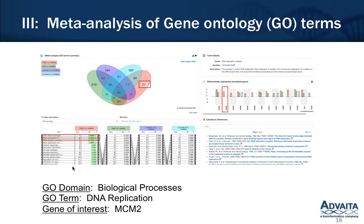I also showed you how you can use gene ontology analysis to generate hypotheses or identify biomarkers. We went into gene ontology and selected biological processes specific to TNBCs, from which we got DNA replication initiation. We found that MCM2 was specifically annotated to this biological process.